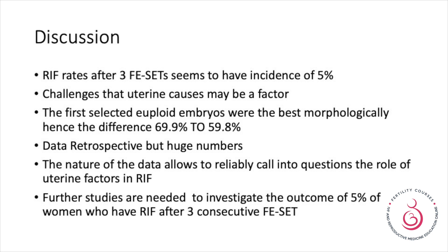Why is there a difference between the first and second group? In the first group, you picked up those that were genetically normal plus those that were morphologically better. It's a retrospective study, but look at the numbers — absolutely huge. The nature of this data questions the role of uterine factors in recurrent implantation failure, and further investigations are needed for the five percent of couples who do not achieve even a clinical pregnancy after transferring three euploid embryos.